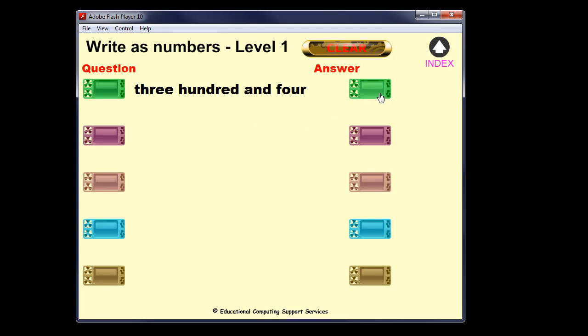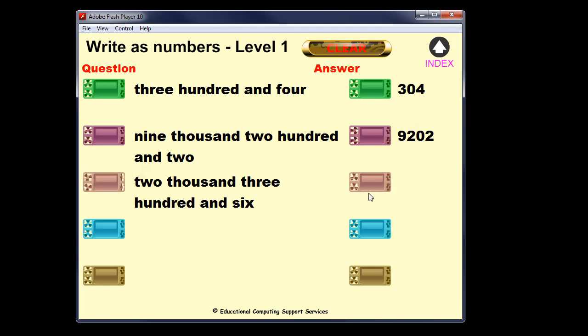And if you have a look at the answer I'm focusing largely on the role of zero to help students understand how that fits in to place value. So 304. Now this is one 9,202. So you can see all of the answers have got a zero in them somewhere.